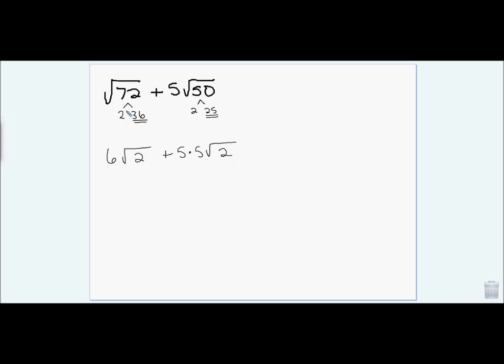And in both cases, I have a 2 remaining. So I have 6 root 2 plus 25 root 2, which gives me 31 times the square root of 2.